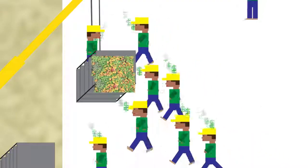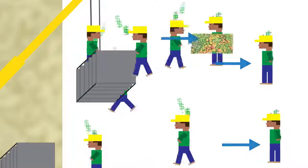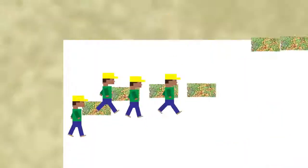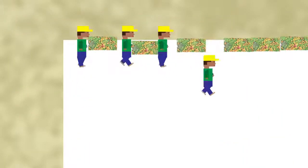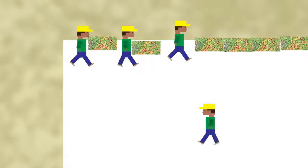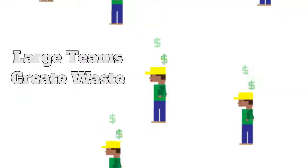Have you also noticed how the team members must wait their turn to pick up a module from the hop-it or to set it on the roof? When the team is too large, some members will be idle while waiting for others to get out of their way.